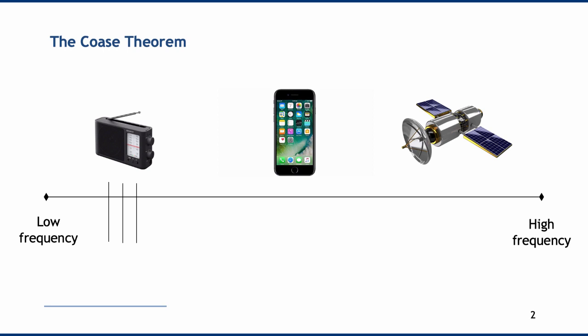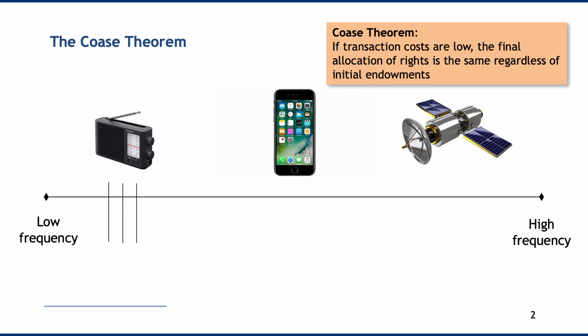The critical issue then comes down to who gets those licenses. Coase's main point was that we can let the market decide who obtains those licenses. He argued that it doesn't matter so much who you initially give those licenses to, as long as there's a market process that determines the rearrangement. This formed the basis of what became known as the Coase theorem: if transaction costs are low — in other words, if it's easy to use the market mechanism — then the final allocation of rights is the same regardless of initial endowments. It doesn't matter who we give the licenses to in the first place; the final allocation will be the same regardless, with licenses ending up with the people who value them the most.